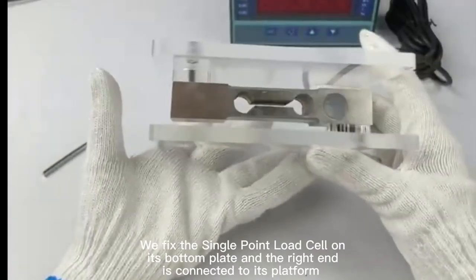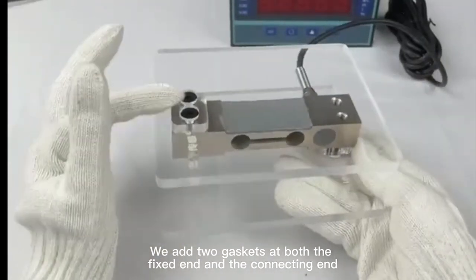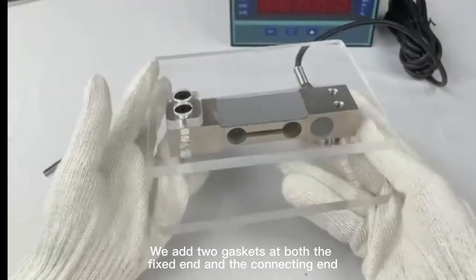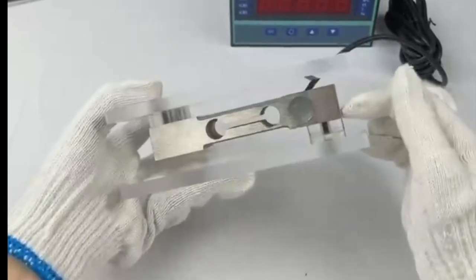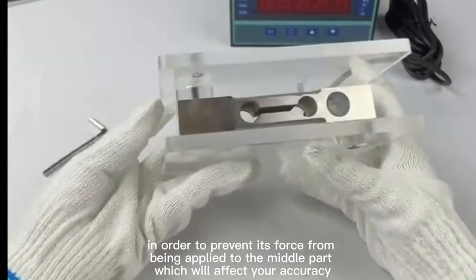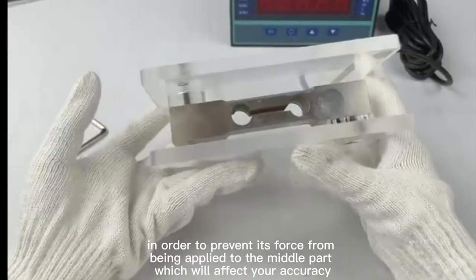We fix the single point load cell on its bottom plate and the right end is connected to its platform. We add two gaskets at both the fixed end and the connection end, in order to prevent its force from being applied to the middle part which will affect your accuracy.